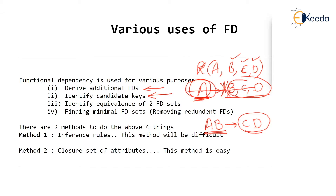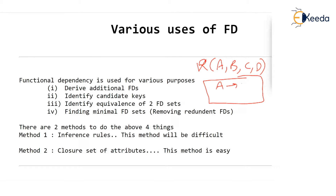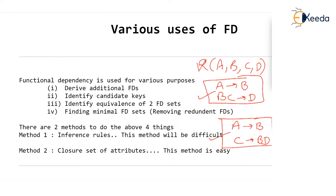The third use of FD is to identify equivalence of two FD sets. Sometimes, a table R with four attributes A, B, C, D is given, and one person has defined an FD set — say A determines B and B, C determines D — while another person has defined a different FD set — say A determines B and C determines B, D. We want to know whether these two FD sets are equivalent — that is, semantically equivalent. Is the meaning that one FD set gives the same as the meaning the other gives?